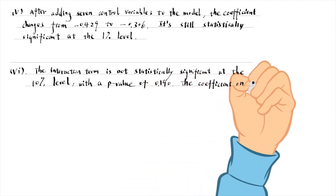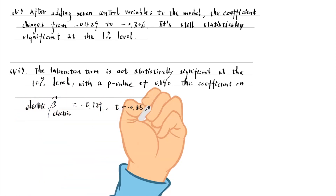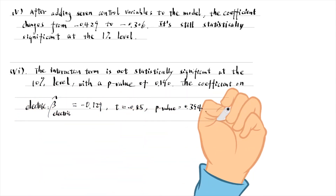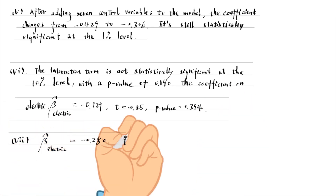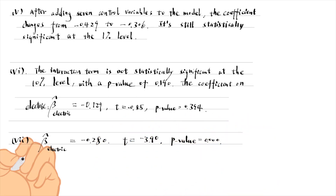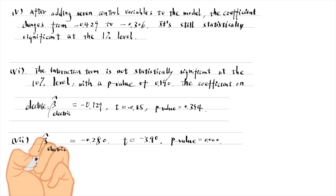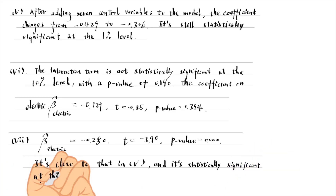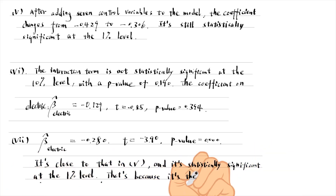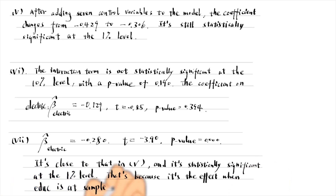The coefficient on electricity becomes much smaller and is no longer significant, but that is the estimate when education is 0. In part 7, we replace the interaction term with the demeaned interaction term. The coefficient on electricity becomes close to that in part 5 and it is statistically significant at the 1% level. That is because the coefficient on electricity is the effect when education is at the sample mean, close to the average partial effect in part 5.